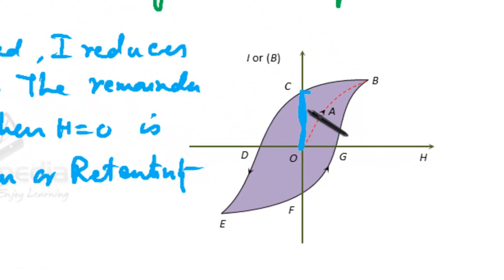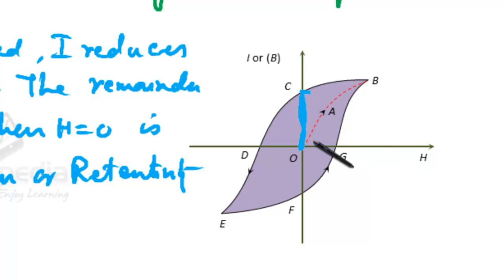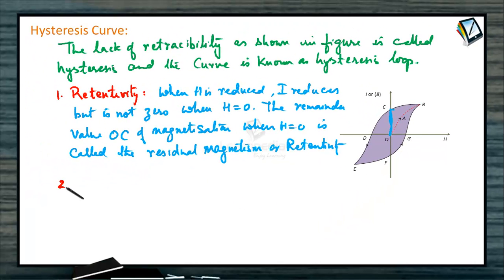The property by virtue of which magnetization I remains in the material even after removal of the magnetizing field is called retentivity or residual magnetism.